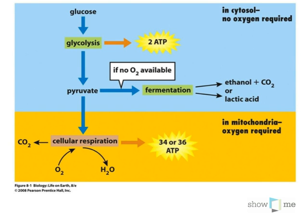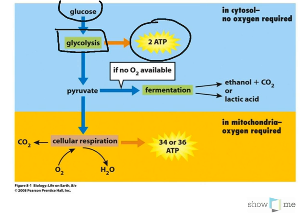This is the overall schematic for cellular respiration, beginning here with glucose and going through the first set of reactions called glycolysis, which we will be covering in this review. That yields, as you can see here, two molecules of ATP. At the end of glycolysis, we have this molecule here called pyruvate. This pyruvate molecule is very important because it forms the branch point for respiration.